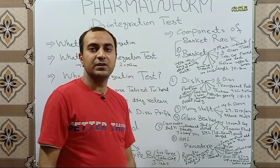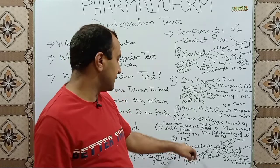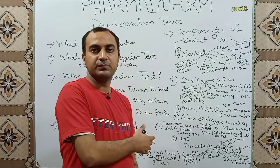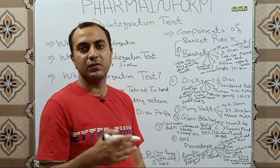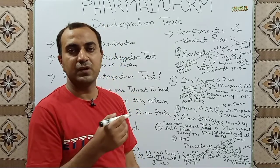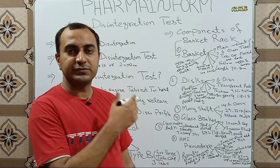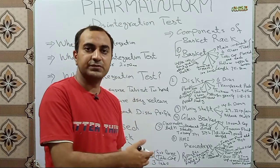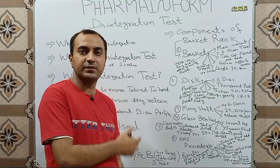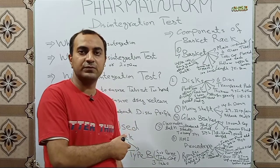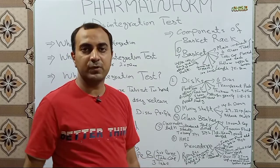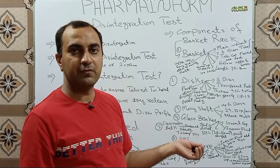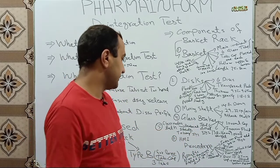The HMI — Human Machine Interface — has a touch screen or different buttons used to start and stop the process, adjust the temperature, and it also has a timer or stopwatch that gives us the disintegration time, telling us how much time our tablets took to disintegrate.